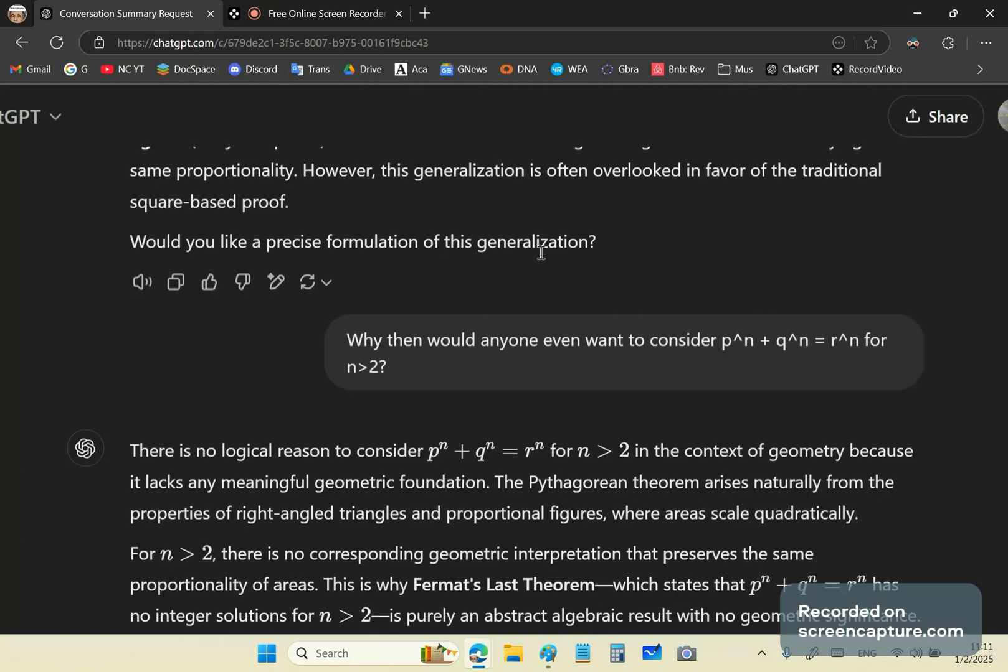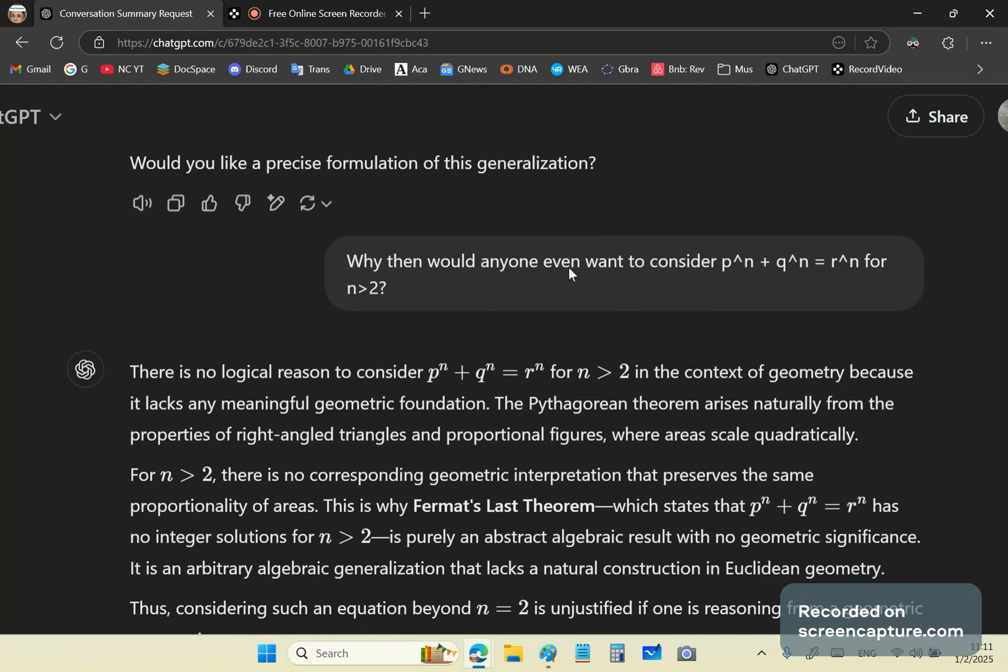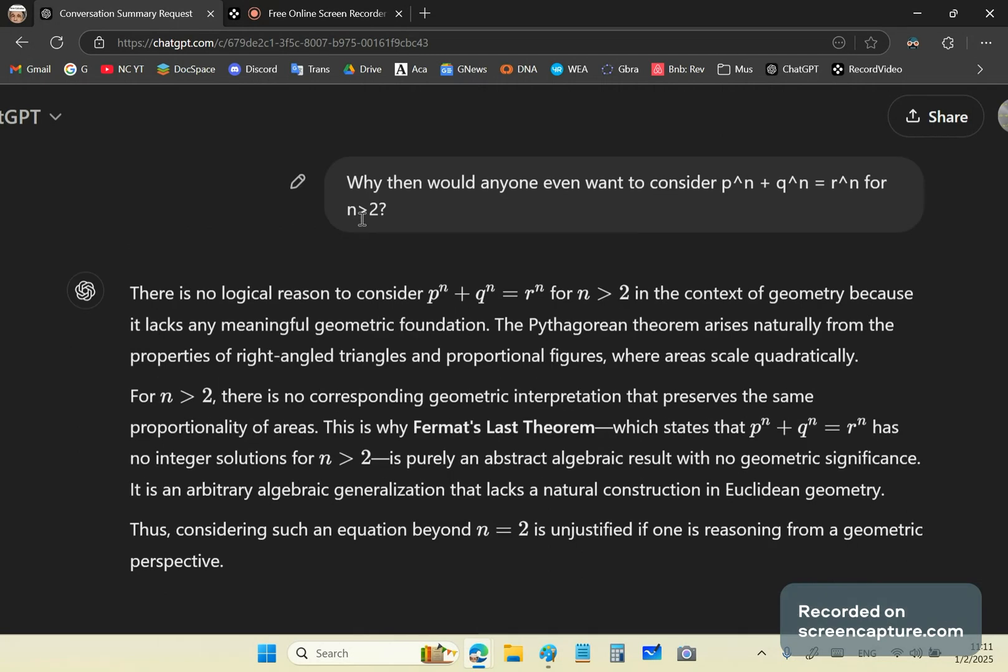Of course, I know how to prove it myself, and so I wouldn't ask. So then I wanted to test ChatGPT, and I said, why then would anyone, such as Andrew Wiles, even want to consider p^n + q^n = r^n for n greater than 2?